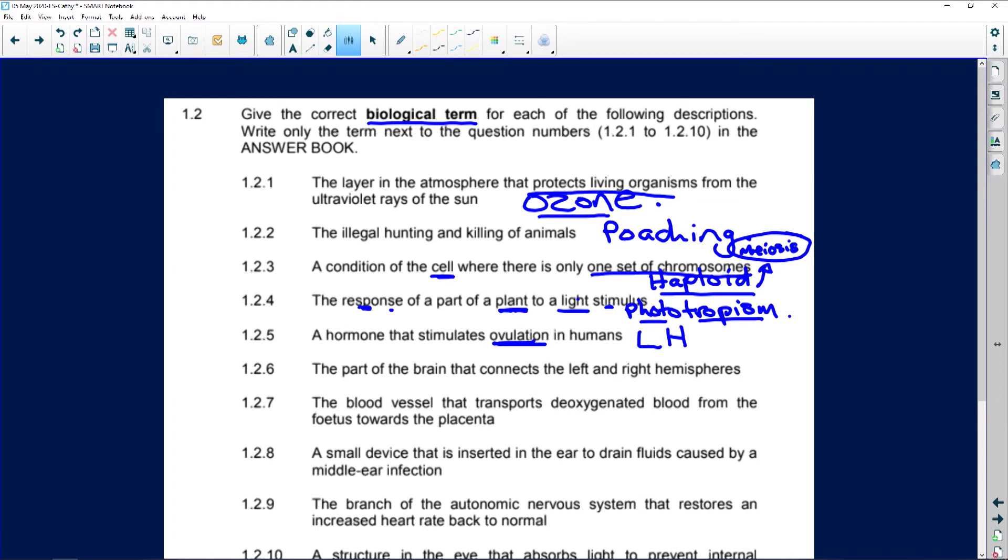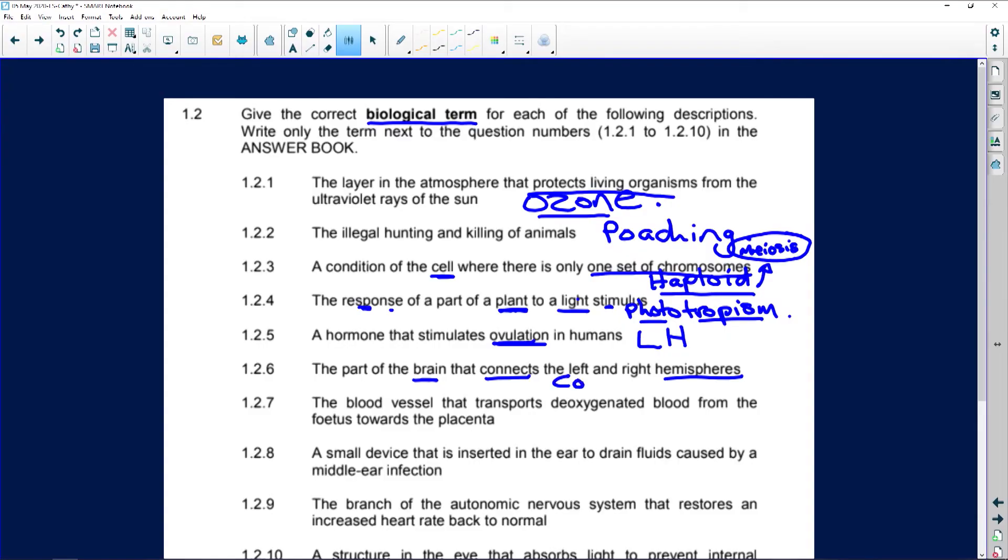The part of the brain that connects the left and the right hemispheres. It keeps them close. And that's how you remember it. It's called the corpus callosum. It keeps the left and the right hemispheres close. So it's the corpus callosum. I mean, how easy is this, guys?